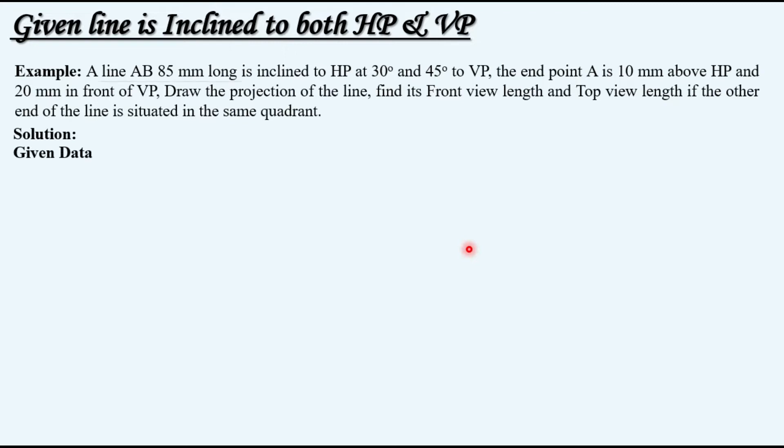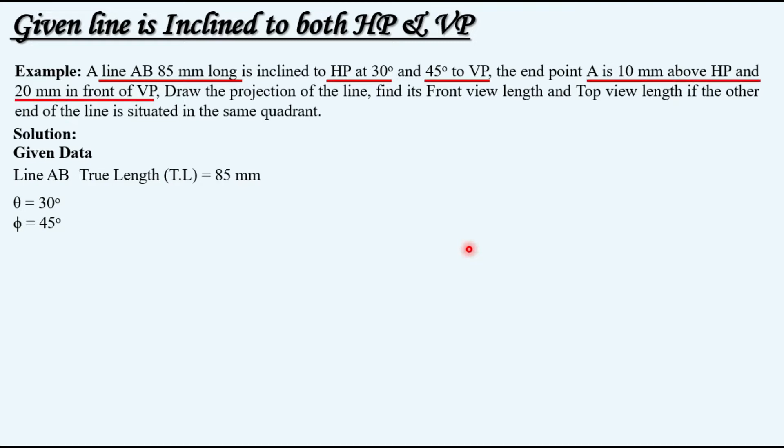Let's extract the given data. Line AB has a true length of 85 mm. Inclination with HP is 30 degrees and with VP it is 45 degrees. Theta is the notation used to indicate the angle with HP, and phi is the notation used to indicate the angle with VP. The front view and top view positions of endpoint A are 10 mm above HP and 20 mm in front of VP, placing A in the first quadrant.